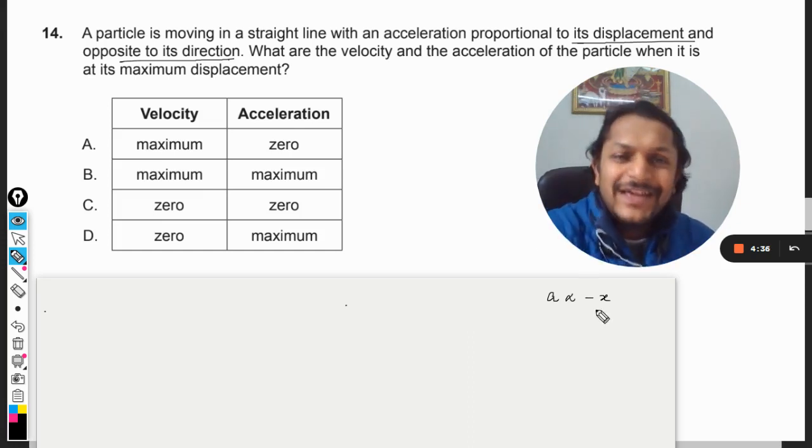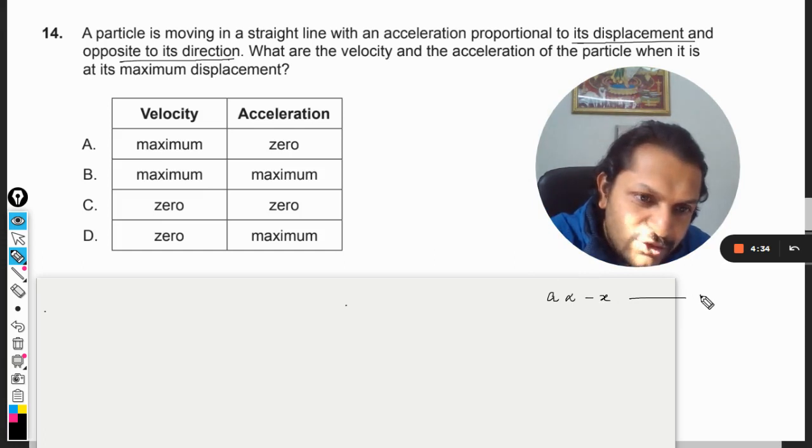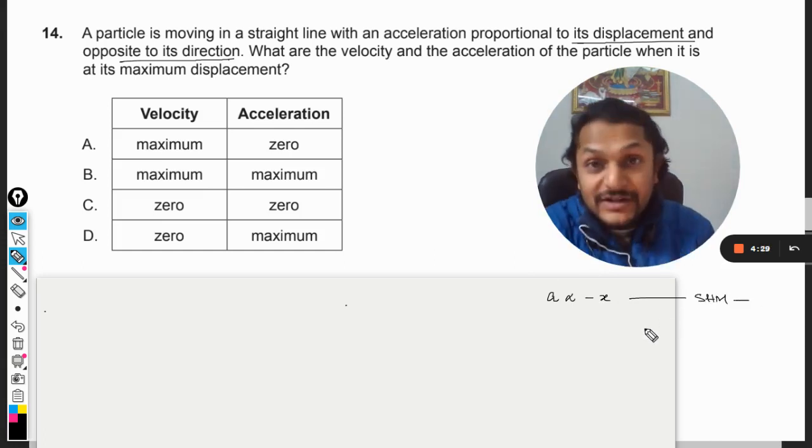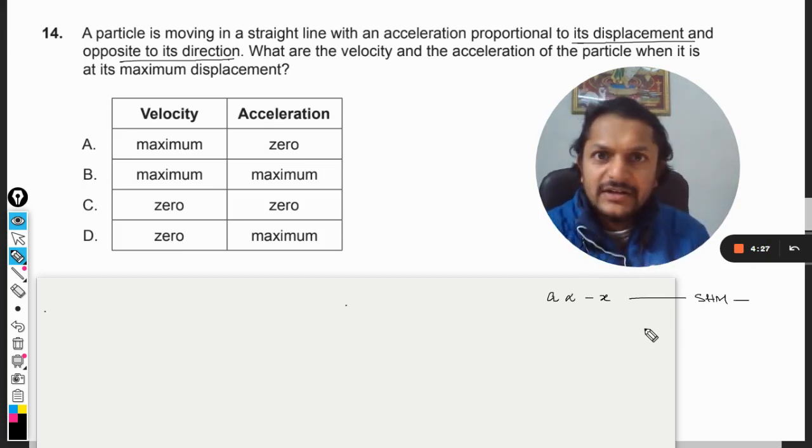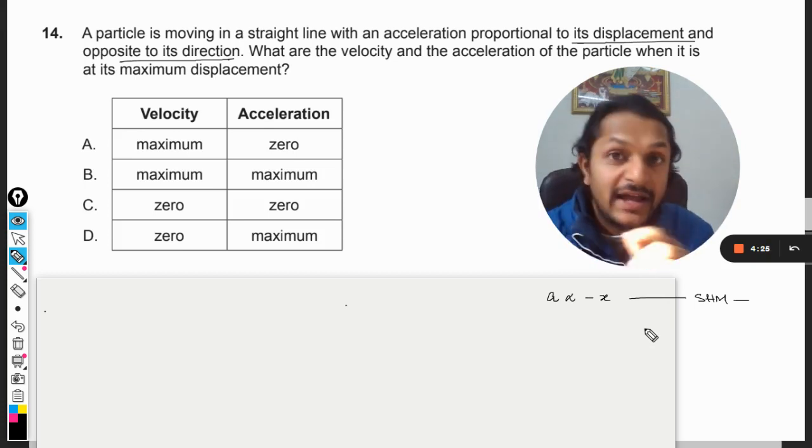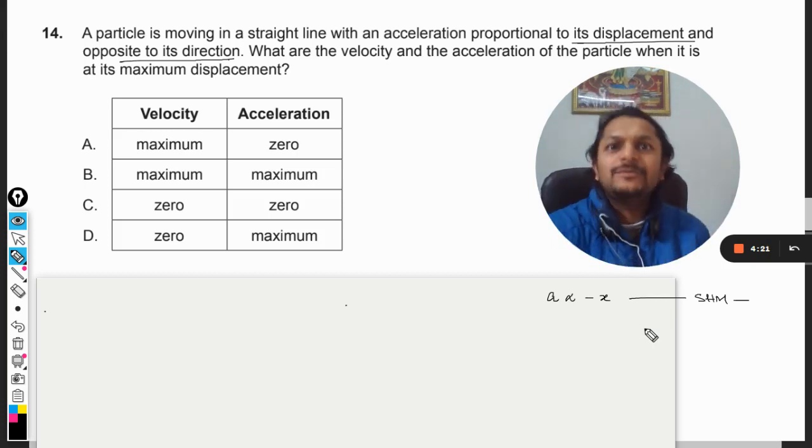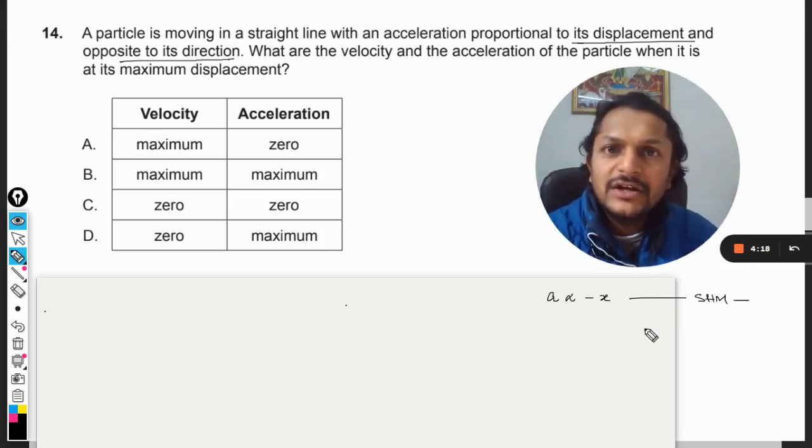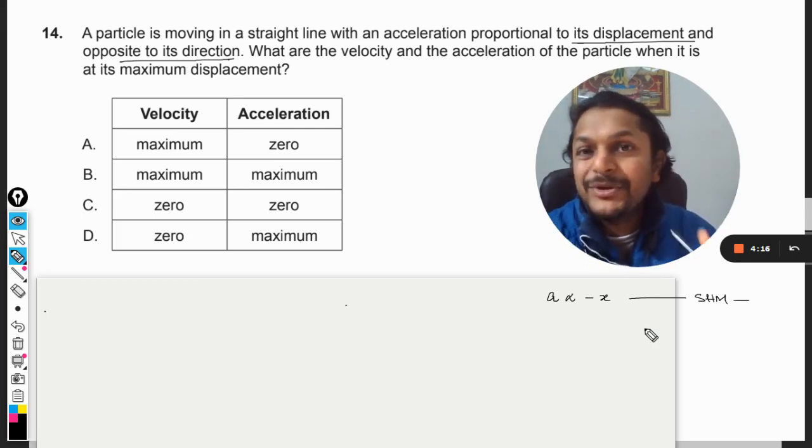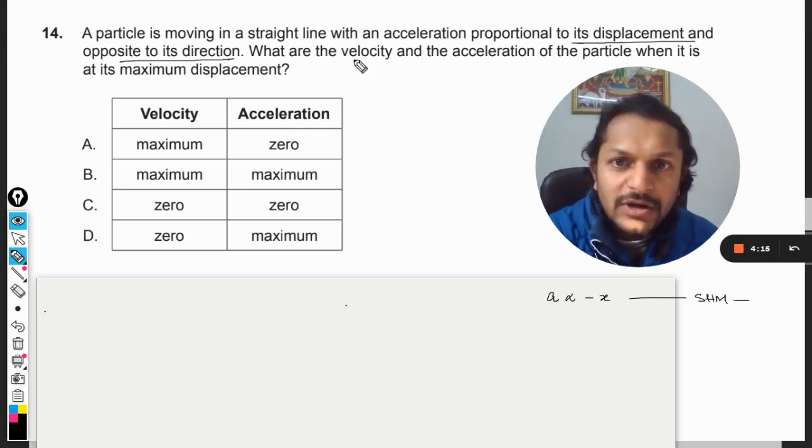What is this? We have read it somewhere. Where have we read it? In the topic of SHM. If there is a body for which this condition is fulfilled, that the acceleration of the body at any time t is directly proportional to the negative of the displacement that it has taken, it becomes a clear-cut case of simple harmonic motion.